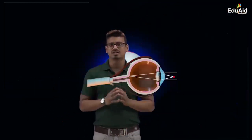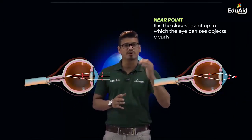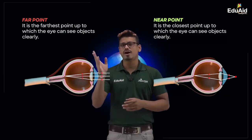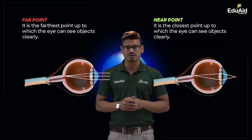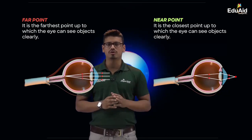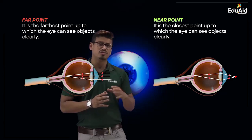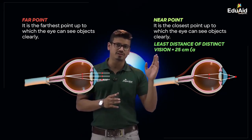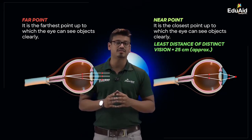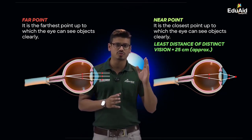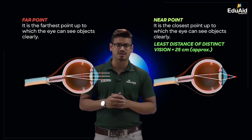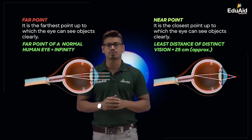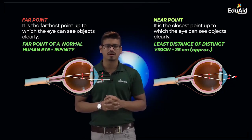After that we have studied about the near point and far point of a normal human eye. The near point is also called the least distance of distinct vision and it is approximately 25 centimeters. The far point of a normal human eye is up to infinity.